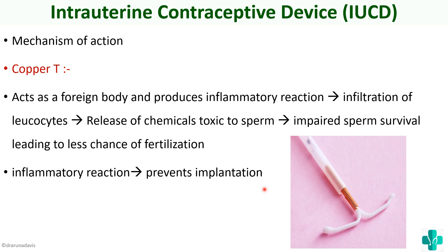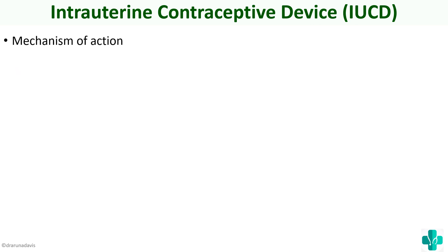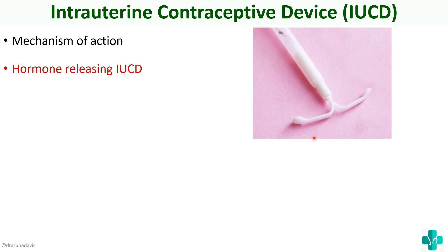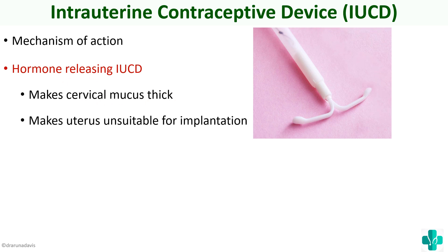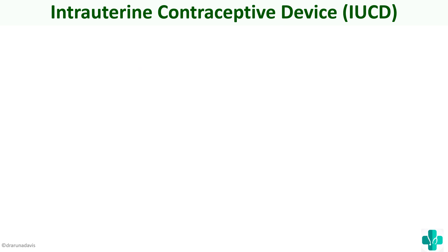Not only that — because of these inflammatory reactions, the uterine endometrial wall is not conducive for implantation to occur, so it prevents implantation also. Basically, the copper produces inflammatory reactions which kill the sperms as well as prevent implantation. For hormone-releasing IUCDs, there is no copper. The mechanism of action is that it makes the cervical mucus thick, just like oral contraceptive pills. The hormonal content makes the cervical mucus thick, makes the uterus unsuitable for implantation, and thereby prevents pregnancy. Sperms cannot enter, and even if they do, the uterus is not conducive for implantation.